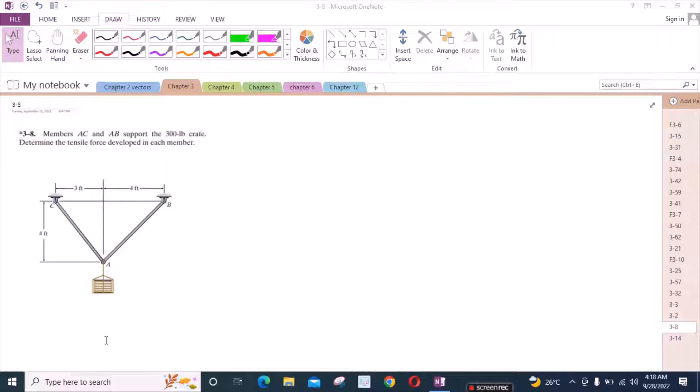Welcome back to the solutions manual. In this video, we will solve problem 3-8 from R.C. Hibbeler Engineering Statics 12th edition. According to this problem, members AC and AB support a 300 pound crate. Determine the tensile force developed in each member.